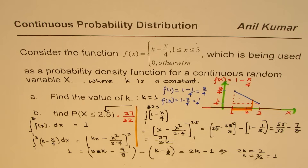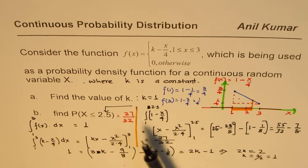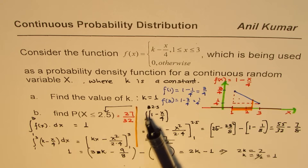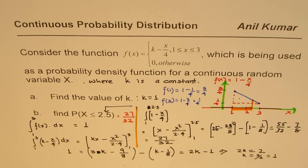I hope that helps. Whenever you have a continuous probability distribution, we are trying to find the area of the probability density function within the given interval — that is the whole concept. The area can be found by doing the integration within the interval, and that gives us the probability. Thank you, and all the best.